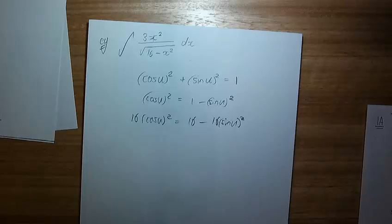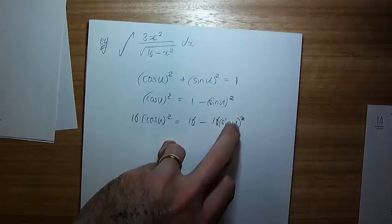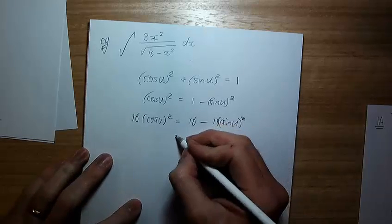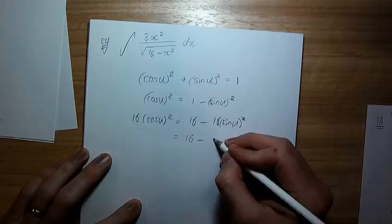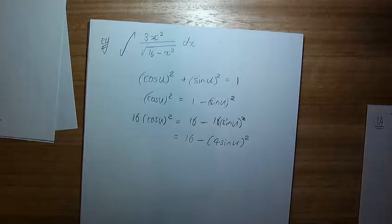That's looking good. I've got 16 minus... Now this is supposed to be just a single thing squared. So I'm just going to bring that 16 inside the squared. It's looking good. And so, cool.